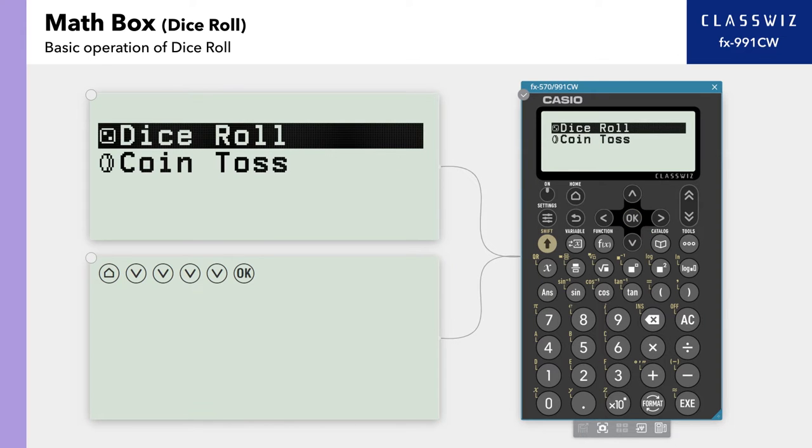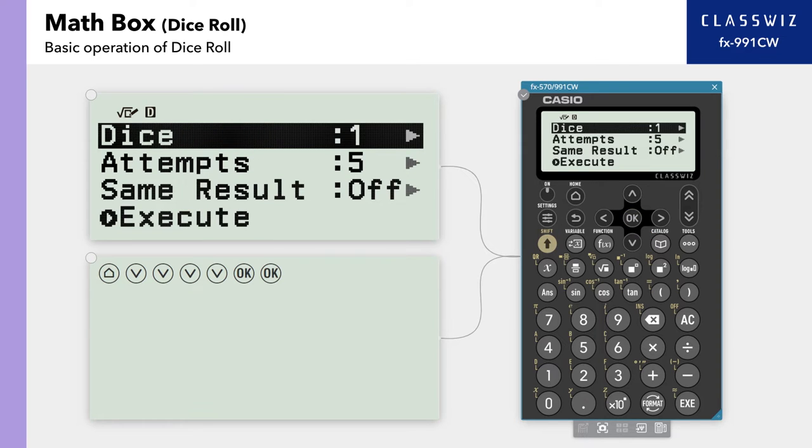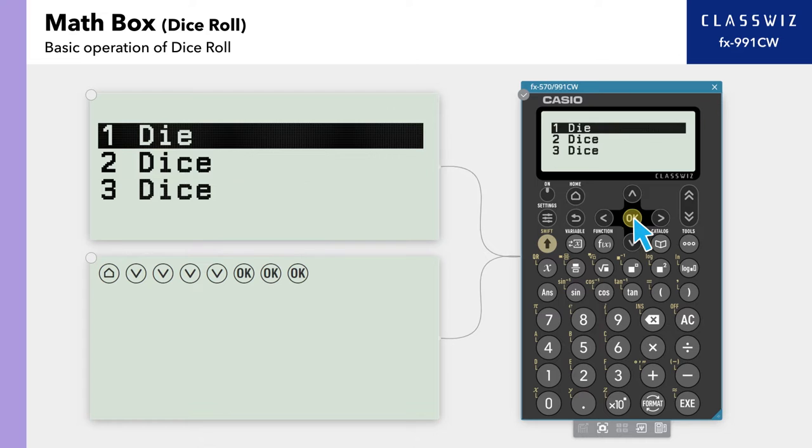You will see Dice Roll and Coin Toss on the screen. Select Dice Roll. For Dice, choose how many dice to roll. You can choose 1, 2, or 3. Here, let's choose 3.